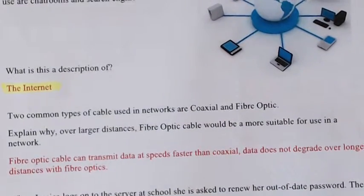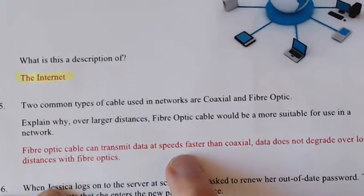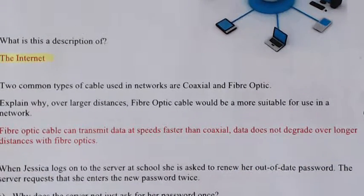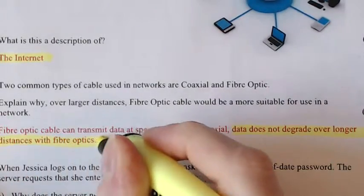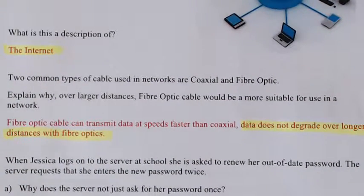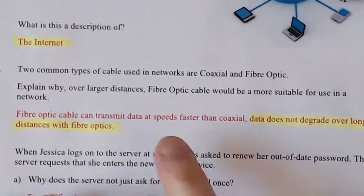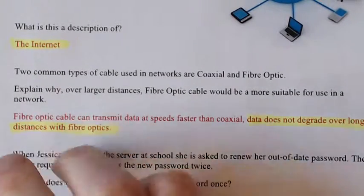Question five is about two types of cables — copper and fiber optic. The question asks why fiber optic cable is more suitable over a larger distance. Data doesn't degrade over a longer distance with fiber optics, whereas with copper the quality of the signal does disintegrate over larger distances. Fiber optic is also cheaper over a larger distance because copper is pretty expensive.